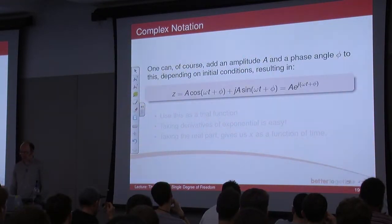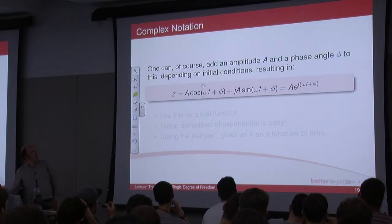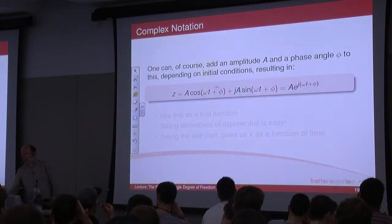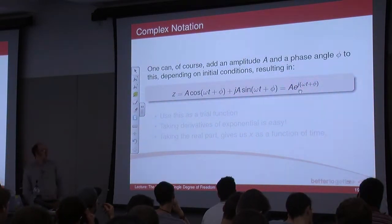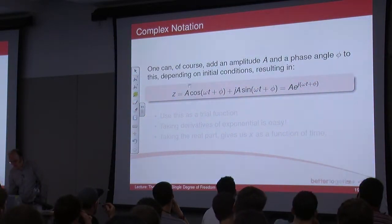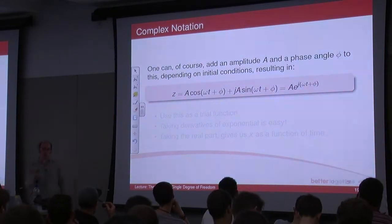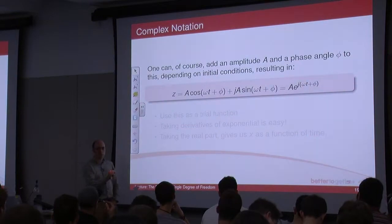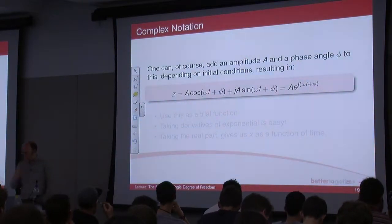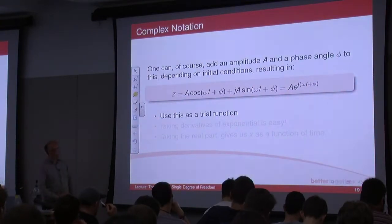And of course, you can add an amplitude and a phase angle if you want to. And so, this bit here, you've seen that before, that was the solution to our free oscillation problem. And that equals, if you add the sine bit, that equals A e to the j omega t plus phi. And obviously, if you take the real part of this, you get this. So, like I said, you can exchange the two with each other. But often, it will be easier if you're using the complex notation, as opposed to the trig. Trust me on that. We'll see it in a minute.